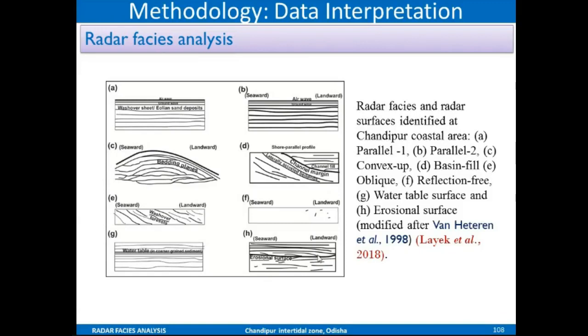If you have a convex operator facies like this type of features, remember these features. Based on these features I will be interpreting the whole criteria. Continuous strata getting abruptly discontinued will be the erosional surface, and this is how water table is recognized.